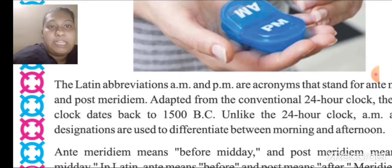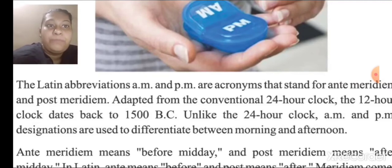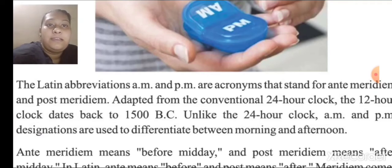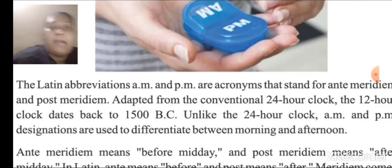Unlike the 24-hour clock, AM and PM designations are used to differentiate between morning and afternoon. For example, if I say it is 1 o'clock, how do you know if it is morning or afternoon? To differentiate, AM and PM are used.